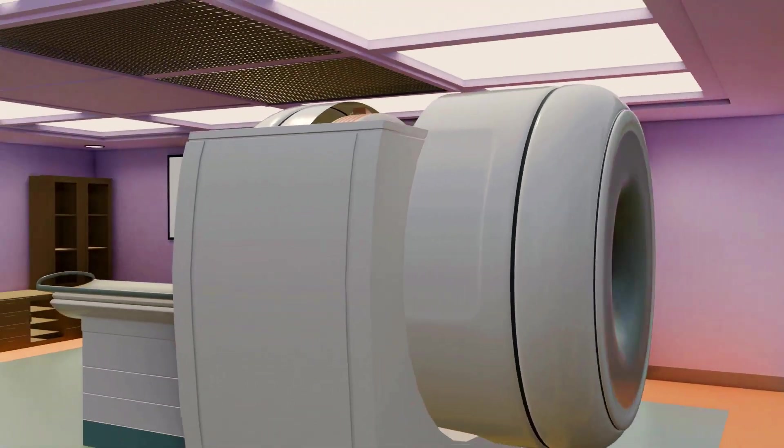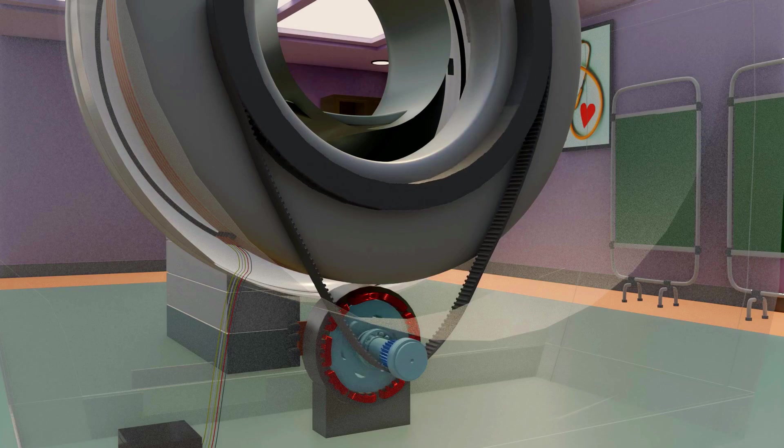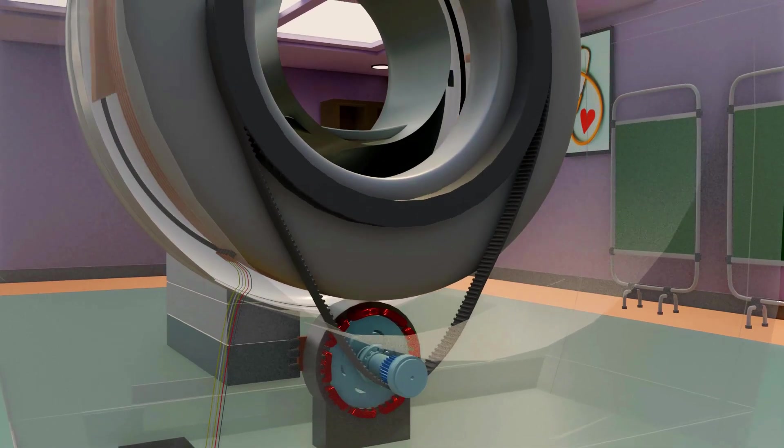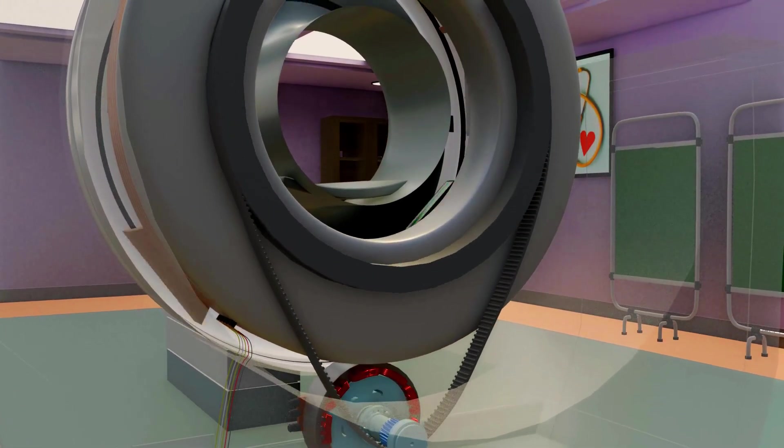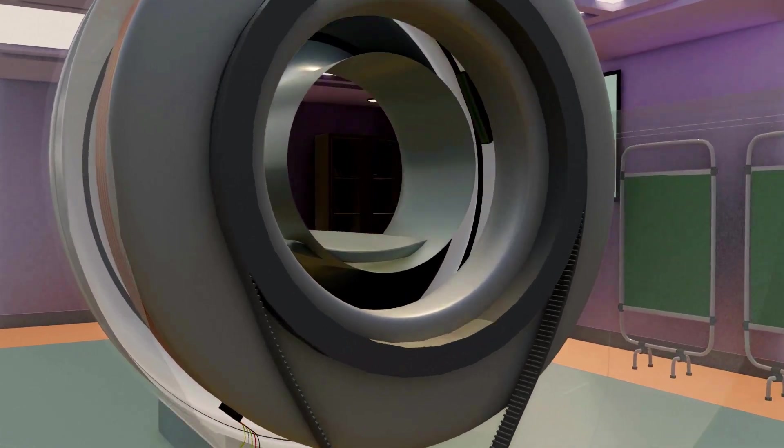Now let's answer the earlier question. To rotate the gantry, a motor is installed at the base, which drives the rotation using a belt and pulley mechanism. In some machines, a ring and pinion gear system is used instead.